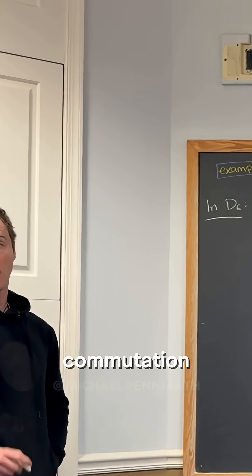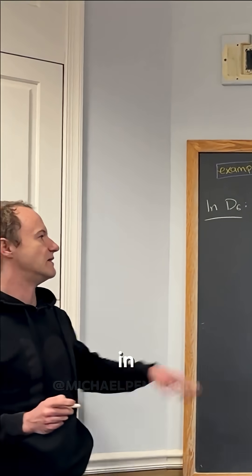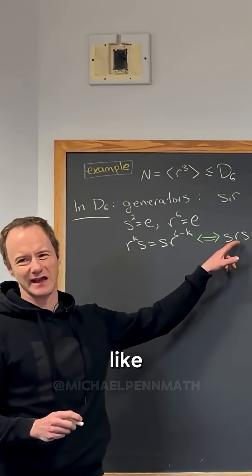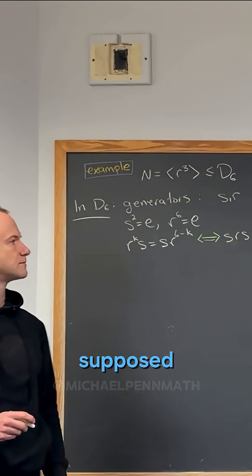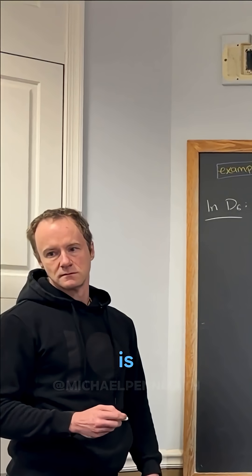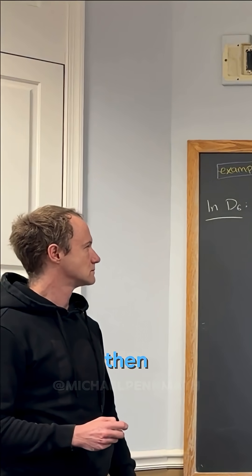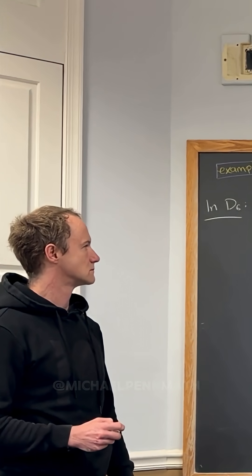Sometimes they give commutation relations in this form, like with this conjugation, because one of these is really like s inverse. Is this supposed to be also of the general form, r to the k on the left and then r to the n minus k on the right? Yeah, okay.